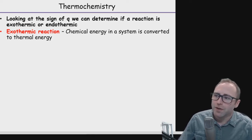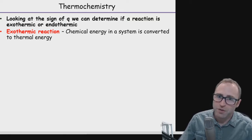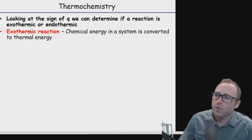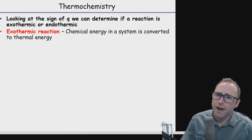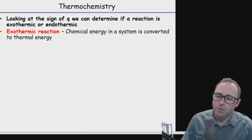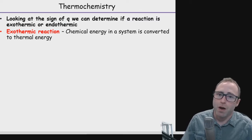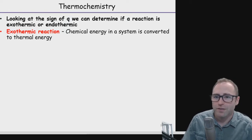An exothermic reaction, in chemistry, is a chemical reaction in a system in which energy is converted to thermal energy. We've got some kind of reaction taking place, and the chemical energy — things like energy stored in bonds — gets converted into thermal energy, heat.